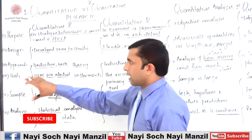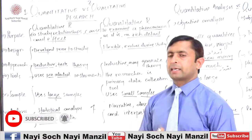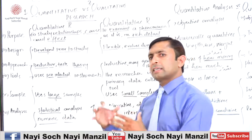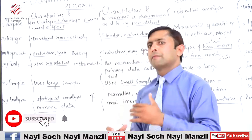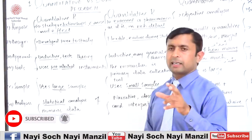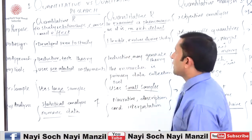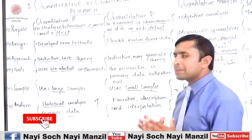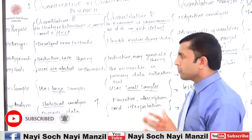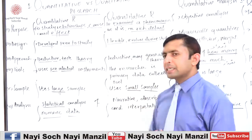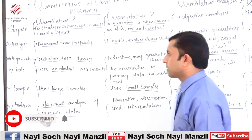As for the tools, quantitative research uses pre-selected instruments. The researcher selects the research tools, whether conducting a study on the basis of a questionnaire or anything else. In qualitative research, the researcher himself or herself is the primary source of collecting data — the researcher is the research tool.